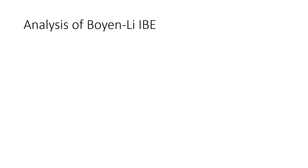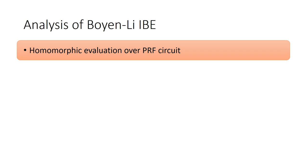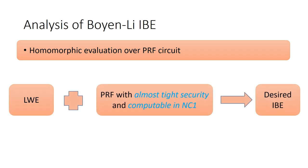Then, through analyzing the above Boyen-Li IBE, we know the core tool of almost-tight IBE is a homomorphic computation of a cyclic PRF. And we know a black box framework: ABB plus an almost-tight PRF with polynomial modulus will imply the desired IBE.